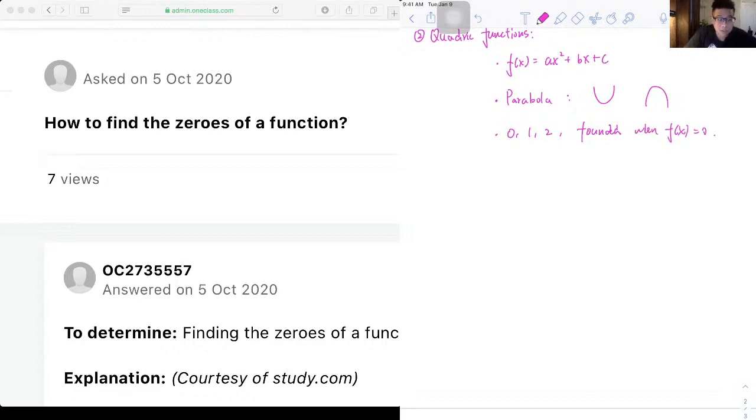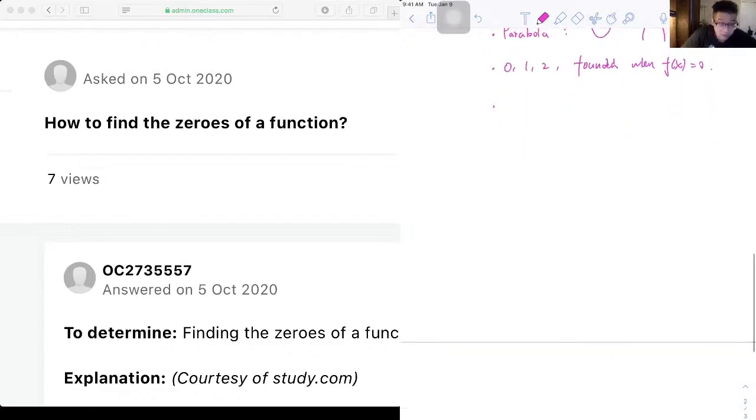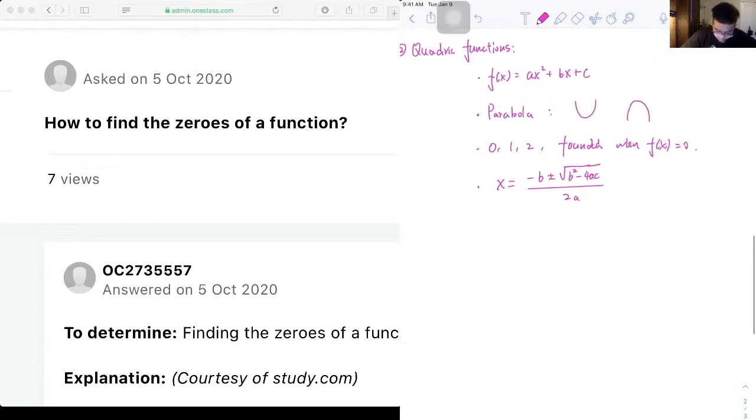Methods of finding zeros of quadratic functions include the square root property, factoring, completing the square, and the quadratic formula. Among all these methods, the quadratic formula is the most useful one, and that is given by x equals negative b plus or minus the square root of b squared minus 4ac, all over 2a, where a, b, c comes from our standard form.